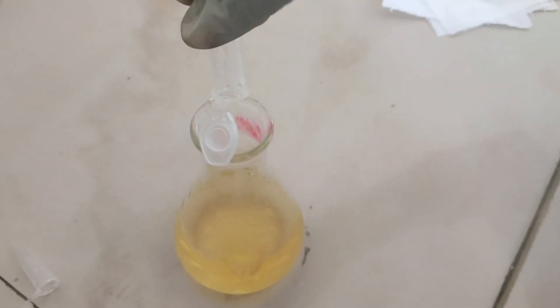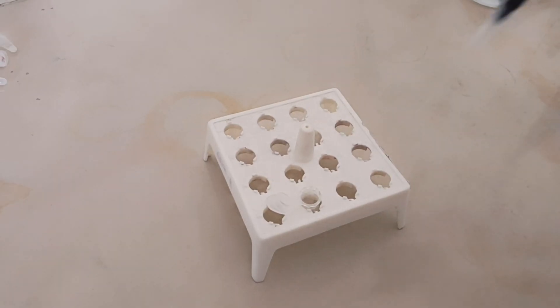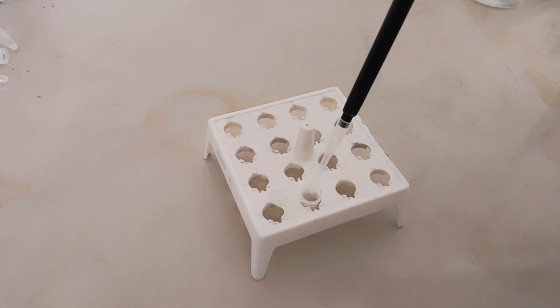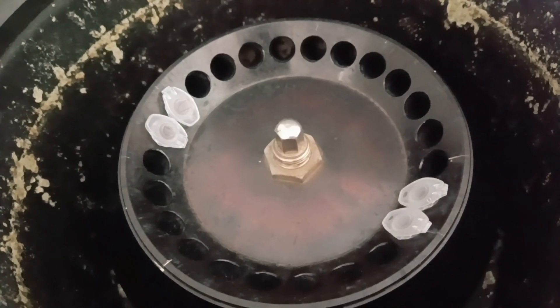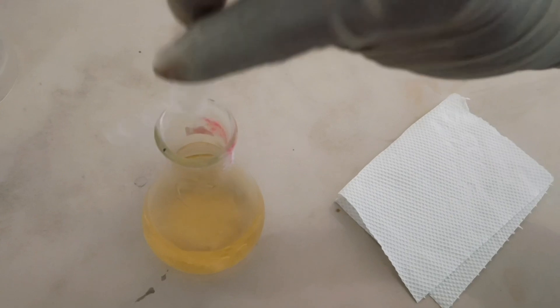Decant the tubes. Add 200 microliters of 70% ethanol. Centrifuge the tubes at 10,000 rpm for 1 minute. Decant the tube and dry the pellet.